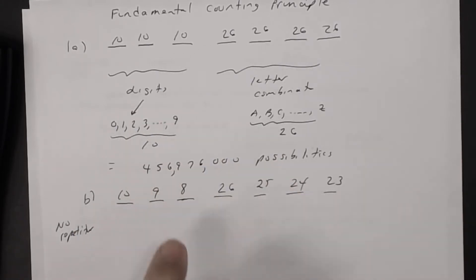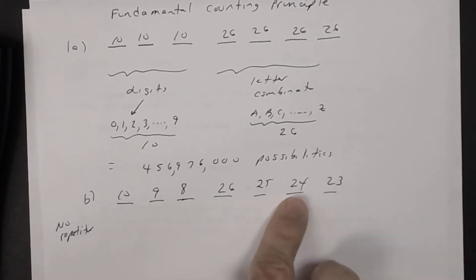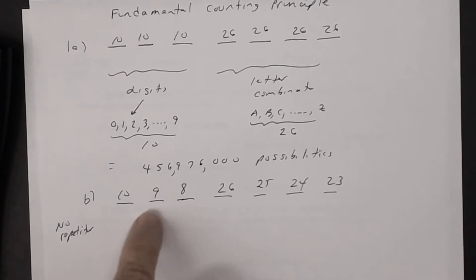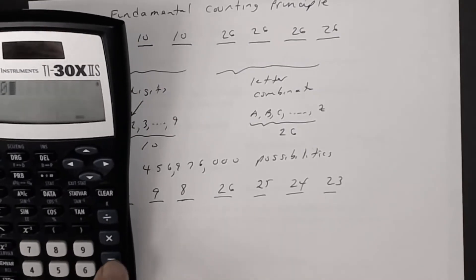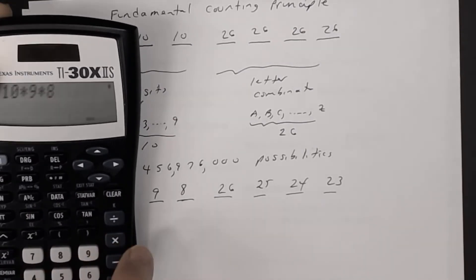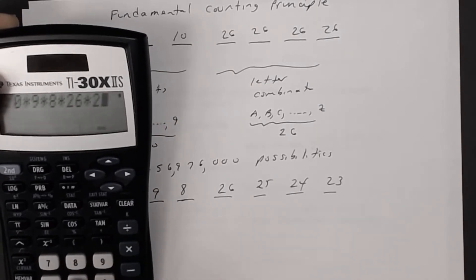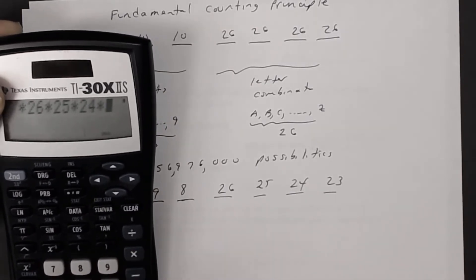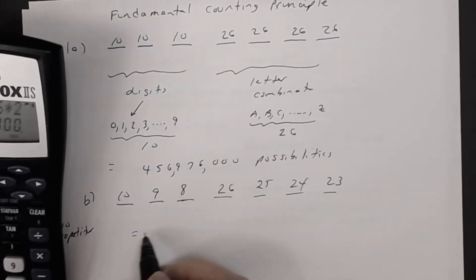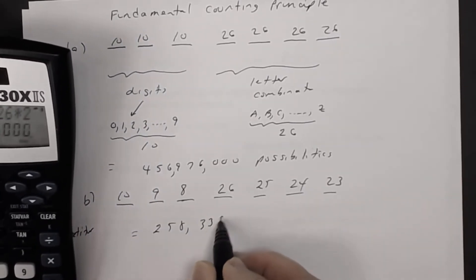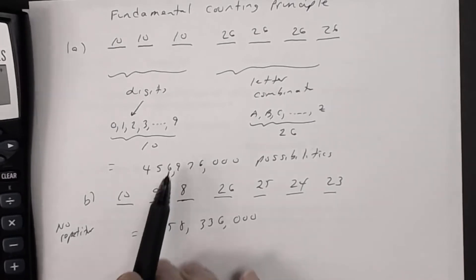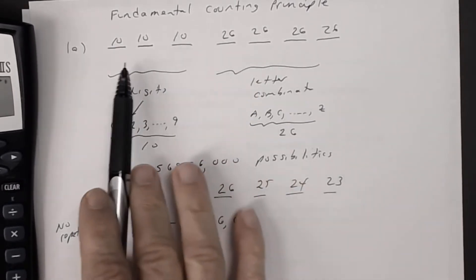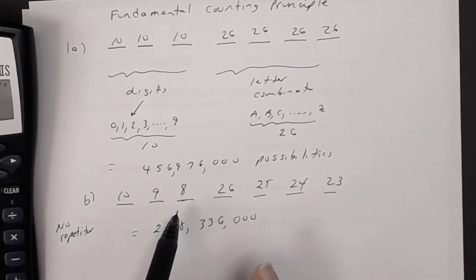By the fundamental counting principle, the number of possibilities is the product: 10 × 9 × 8 × 26 × 25 × 24 × 23 = 258,336,000. You can see it decreases compared to part A, because you can't use any repetition here.